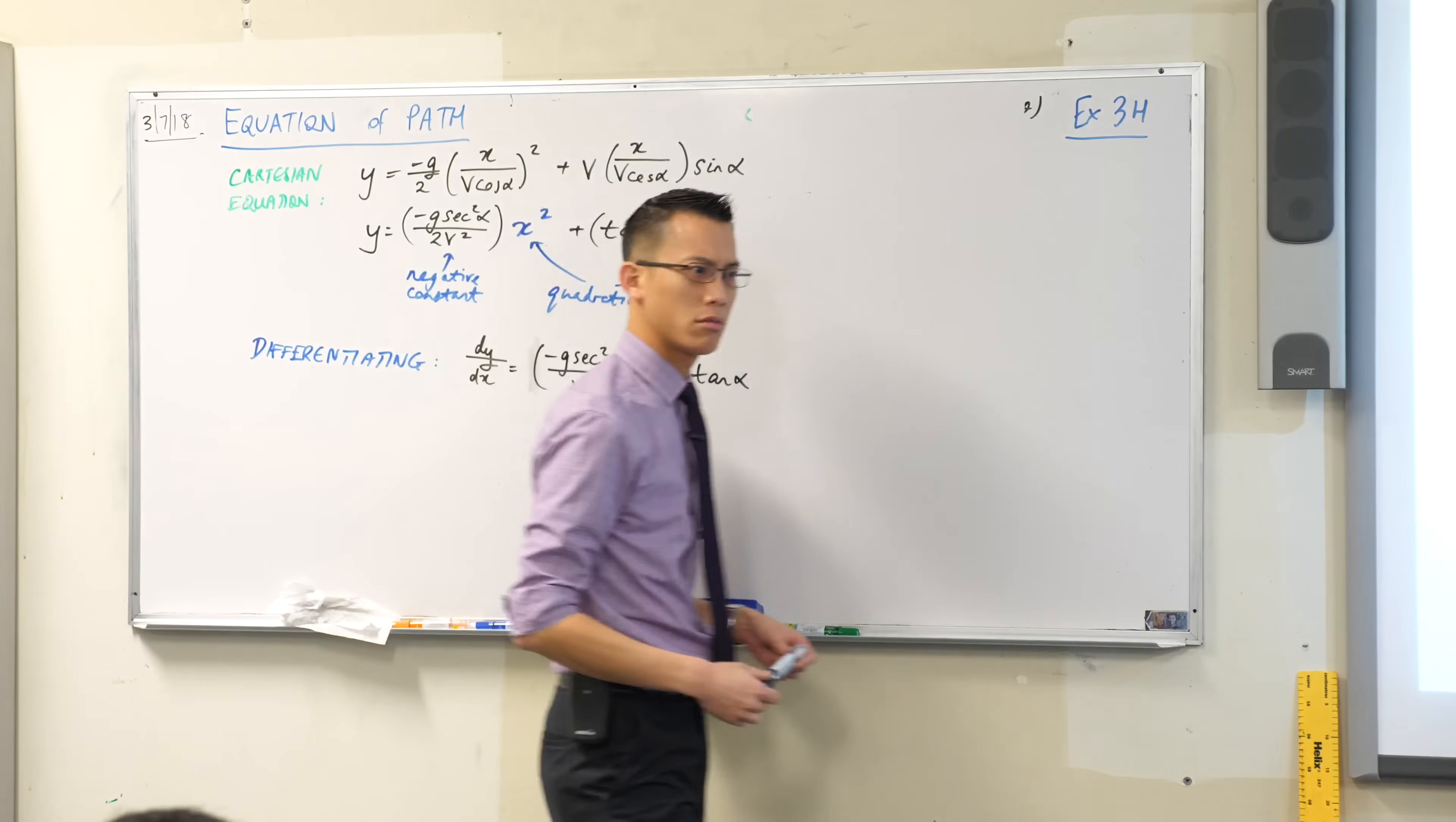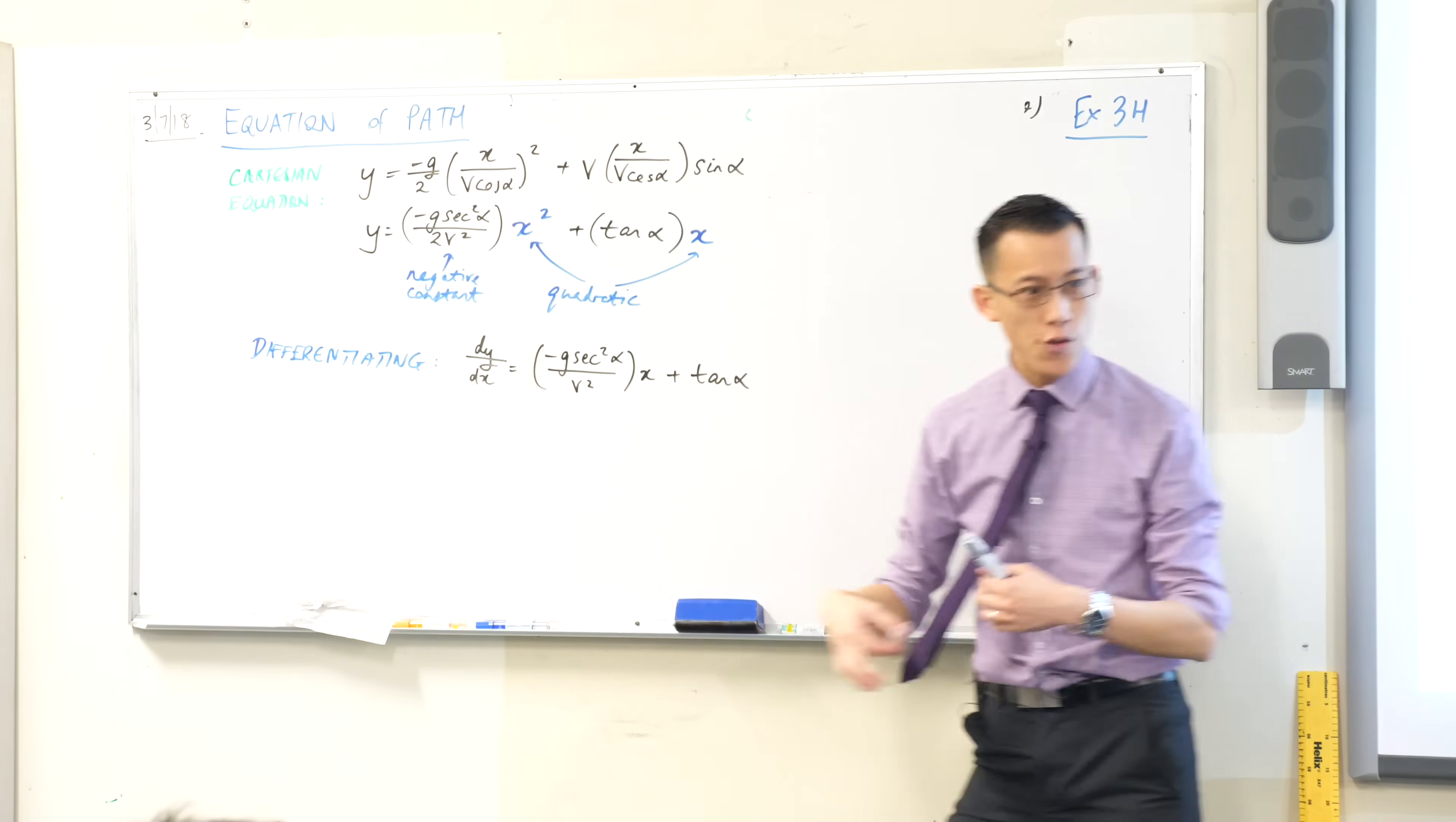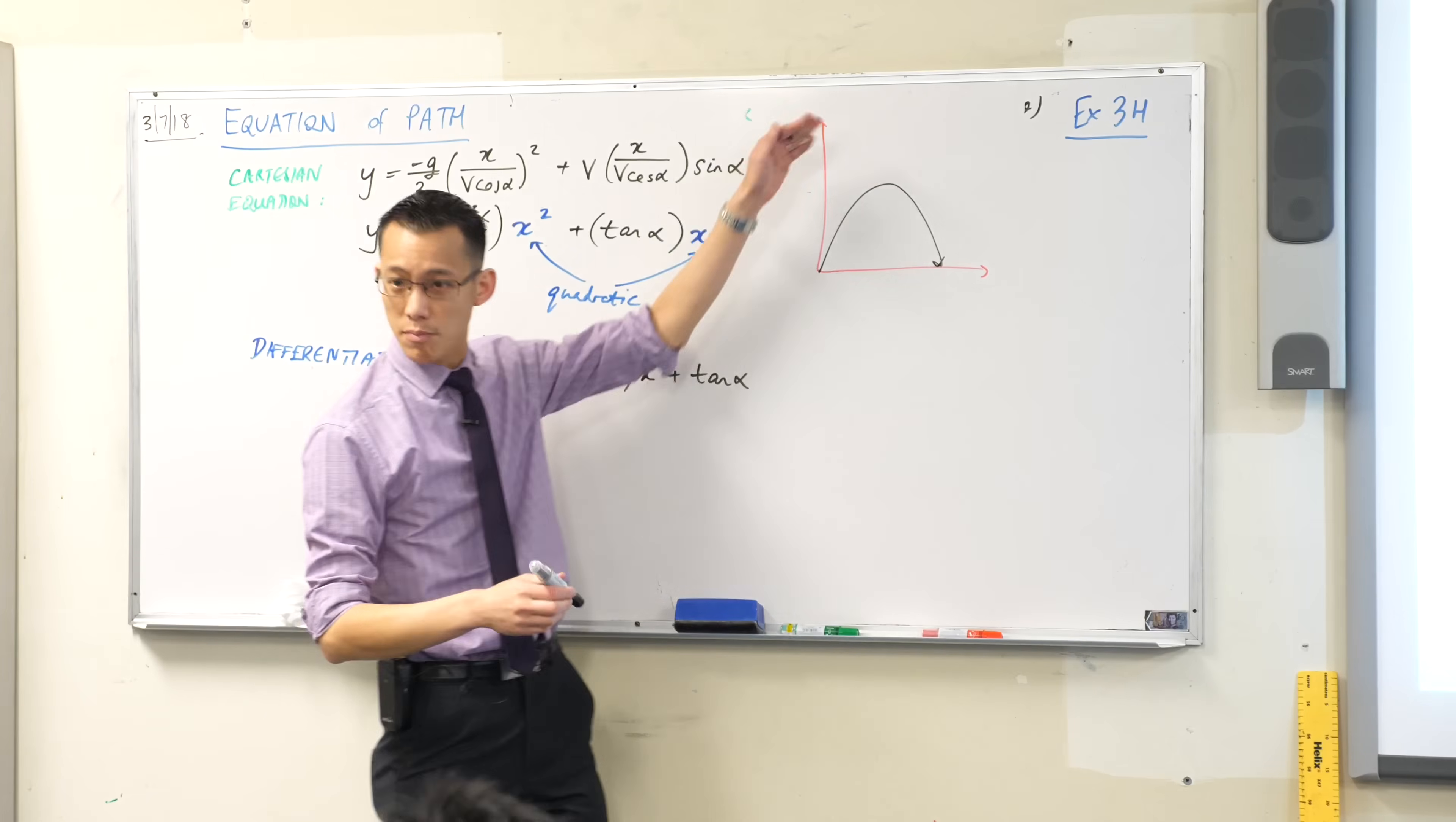Now what does the derivative tell you? Go back to the first principle, what's the point of the derivative, what is it? It's the gradient function, very good. Now in the context of a projectile, the gradient function, this is probably worth drawing it out. If you had just a regular projectile, go ahead and draw one. So it starts at the origin, it lands.